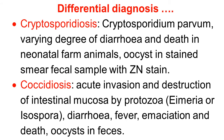Similarly, Coccidiosis causes acute invasion and destruction of intestinal mucosa by protozoa — Eimeria and Isospora. This also occurs in young animals. Neonates show diarrhea, fever, emaciation, and death, and it is diagnosed by finding oocysts in the feces.